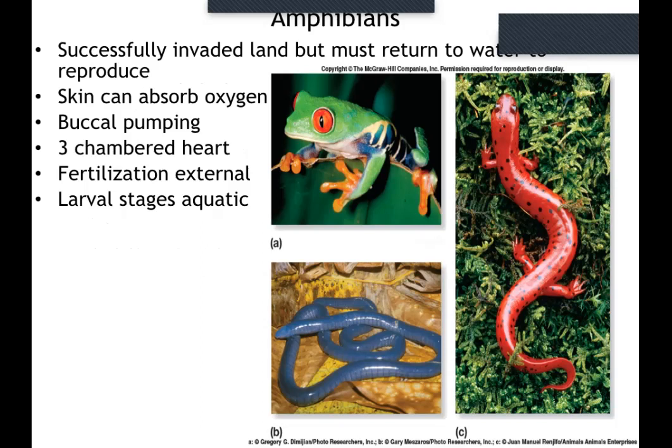Amphibians have three-chambered hearts, by the way — fish have two-chambered hearts. You have a four-chambered heart, and crocodiles and lizards also have four-chambered hearts. Amphibians' hearts are not as efficient at respiration, but they don't need to do as much because they're not warm-blooded. They're cold-blooded — ectothermic is the scientific term. Fish are generally cold-blooded as well. There are exceptions like tuna, which can do some pretty amazing things, but their body temperatures are generally more reliant on environmental temperature.